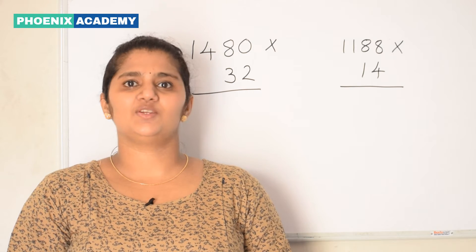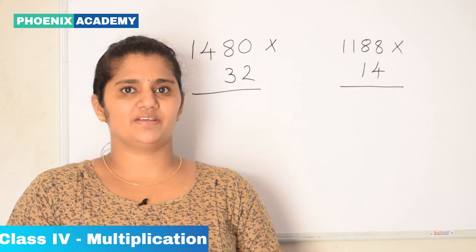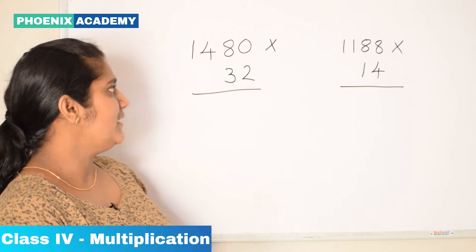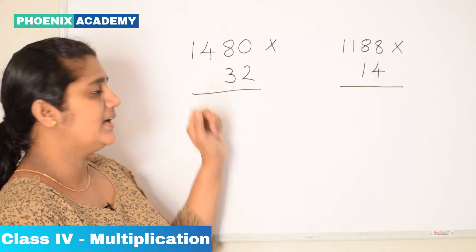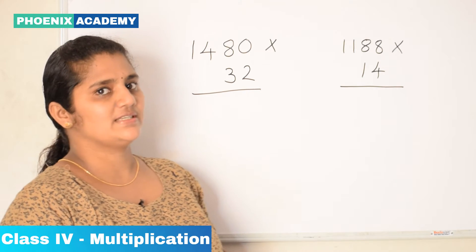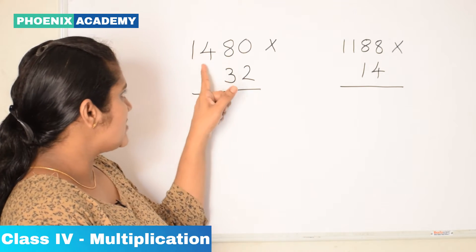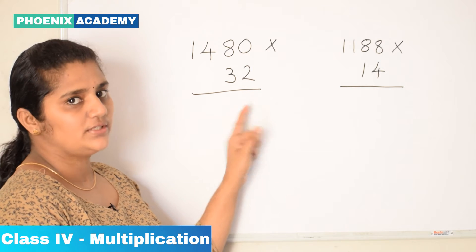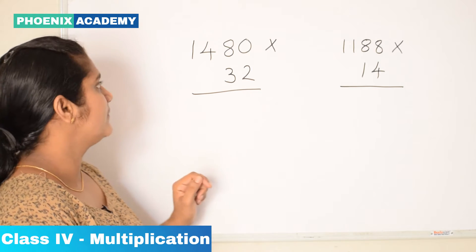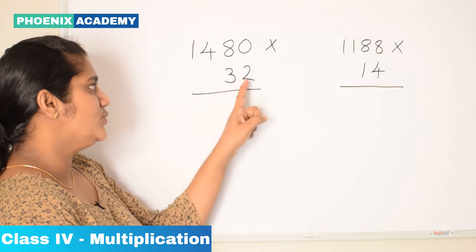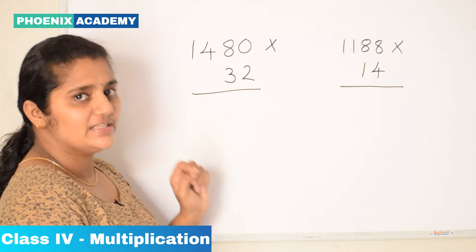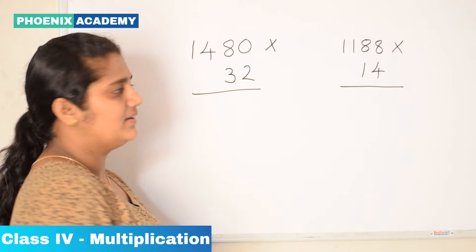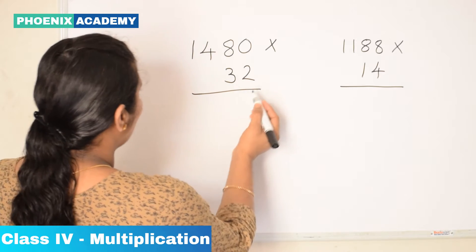Multiplication by a 2-digit number. Here we are going to multiply a 2-digit number with a 4-digit number: 1,480 into 32. First we multiply 2, the digit in the 1's place, with 1,480. Let's multiply.